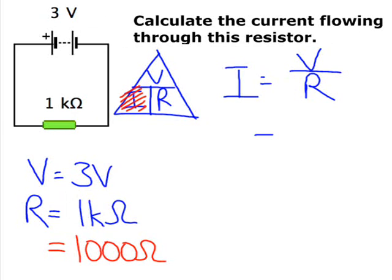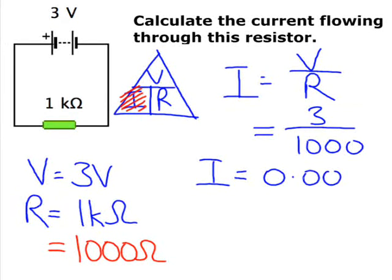Now let's substitute these values into our equation. V over R is 3 divided by 1000. So our current is 0.003 amps. And we could write this as I equals 3 milliamps.